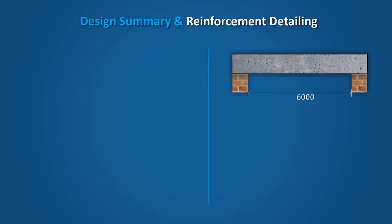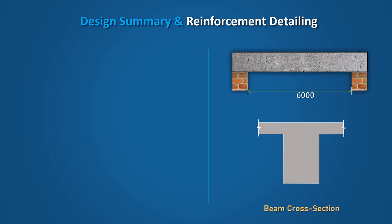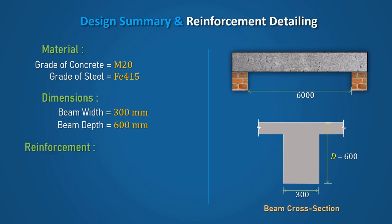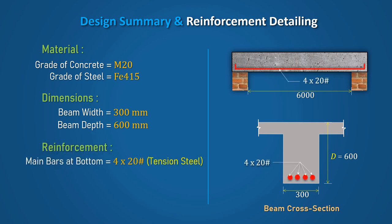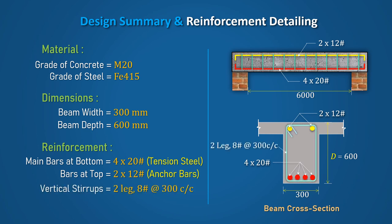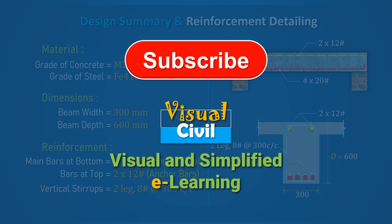In summary, a simply supported T-Beam is designed with M20 grade concrete and Fe415 steel. The beam width is 300mm and the total depth is 600mm. Four numbers of 20mm diameter bars are provided as main tension reinforcement at the bottom, and two numbers of 12mm diameter bars are provided as anchor bars at the top. Two-legged 8mm diameter vertical stirrups are provided at a spacing of 300mm center-to-center. Subscribe to this channel and press the bell icon to get notifications of such civil engineering videos.